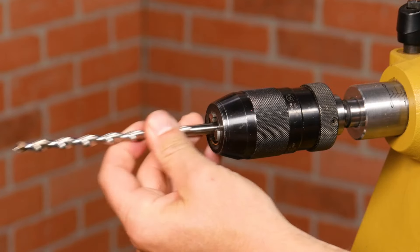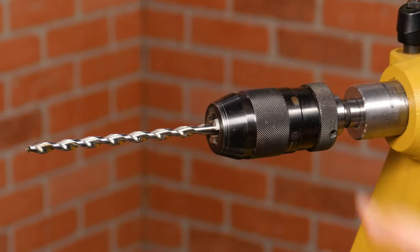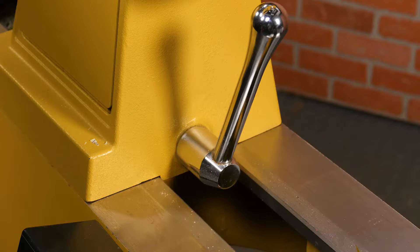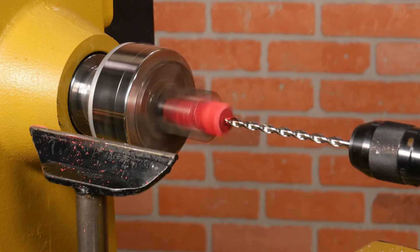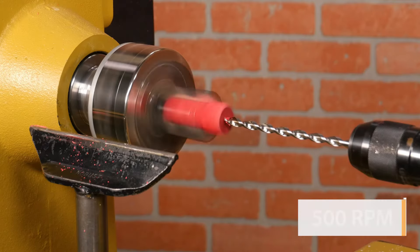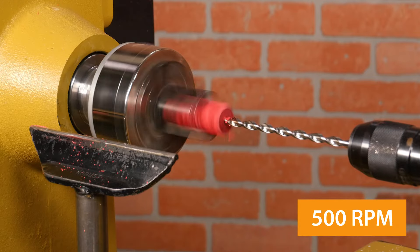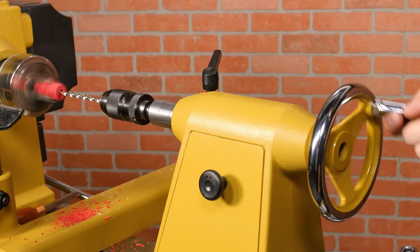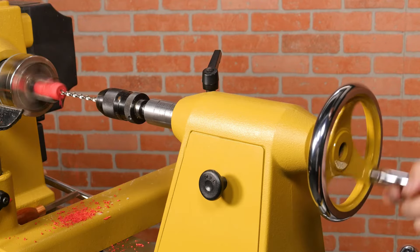Secure the drill bit in the tailstock using a drill chuck and move the tailstock up until the bit is almost touching the blank, then lock down the tailstock. Now turn the lathe speed down to around 500 RPM, then advance the bit slowly by turning the hand wheel on the tailstock.